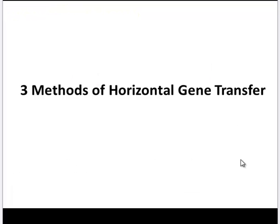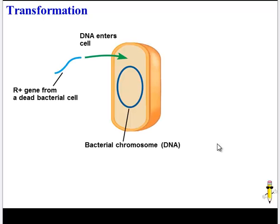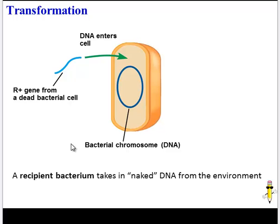There are three methods bacteria use to transfer their genes horizontally. The first is transformation, which was demonstrated in Griffith's experiment. A bacterial cell can take up a naked piece of DNA from the environment. In Griffith's experiment, it was a gene that coded for a pathogenic property — the R-plus gene — which could enter the cell and become part of the chromosome.